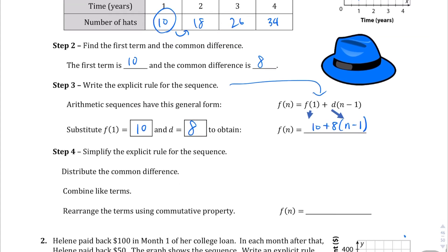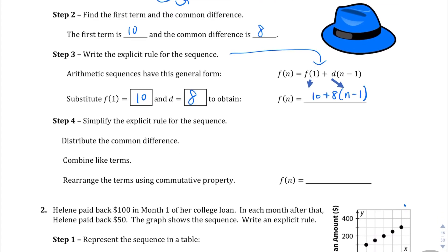We're going to simplify that explicit rule, because we need to first distribute that 8 to both terms. We end up with f(n) is equal to 10 plus 8n minus 8. We have like terms here. If we add those, we end up with 8n, and then 10 minus 8 is going to give us plus 2. That is our explicit rule for that particular context.